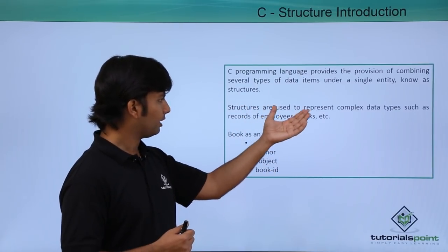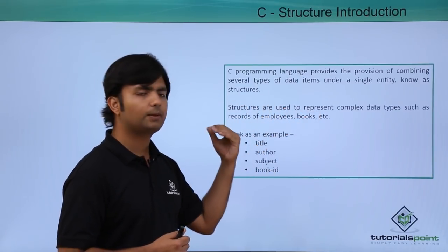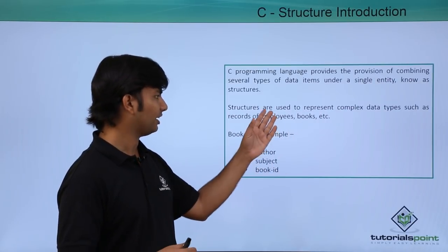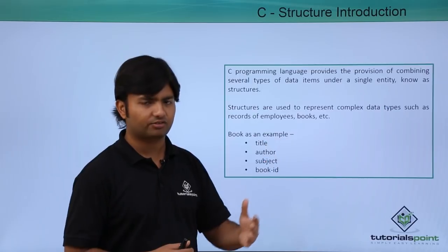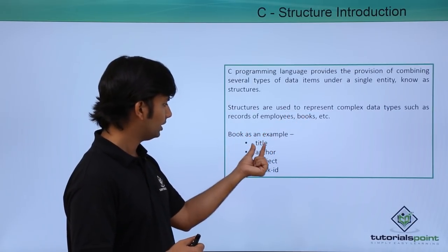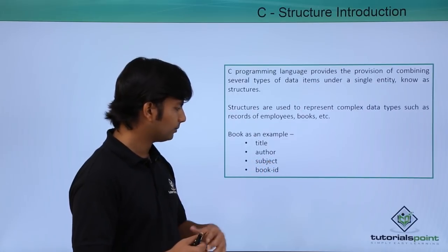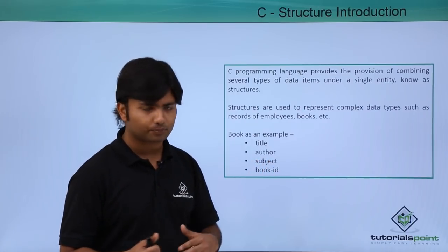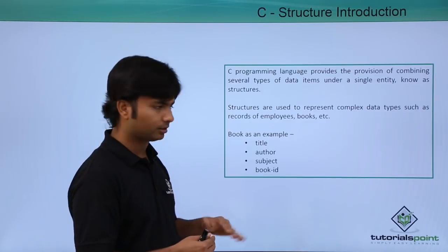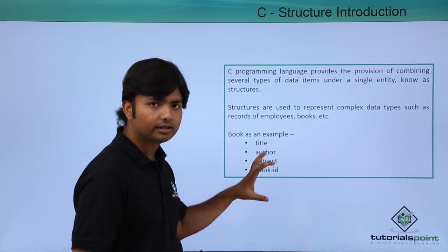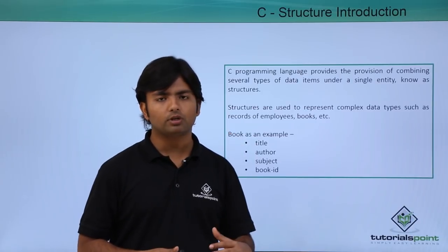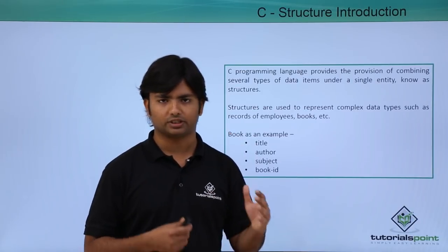If I want to keep the details of any entity such as employees, books, etc. — for example, here we have taken an example of books with fields like title, author, subject, and book ID. We can create separate variables for that, but if I want a combined definition of an entity, it will be possible only through a structure.